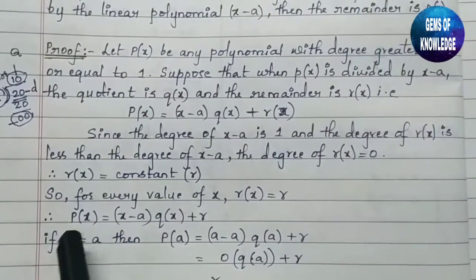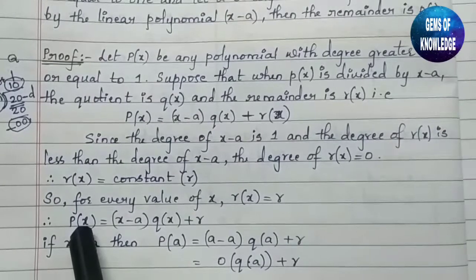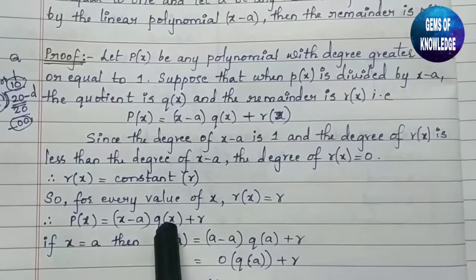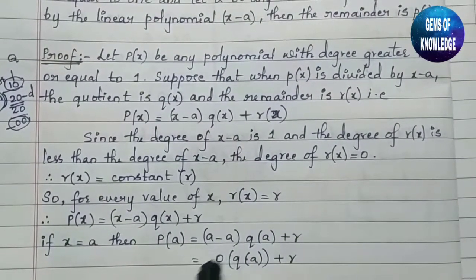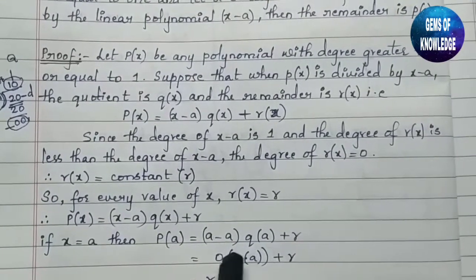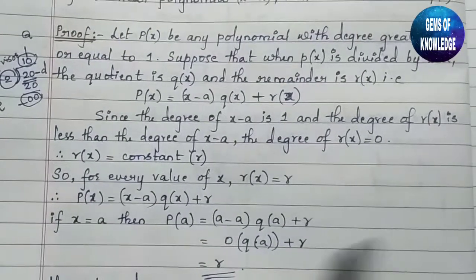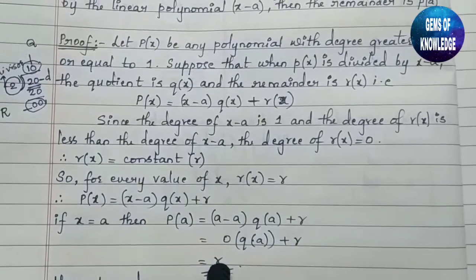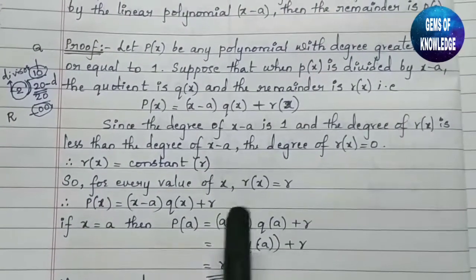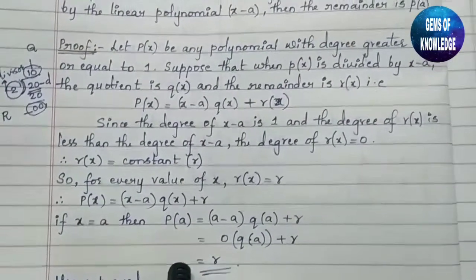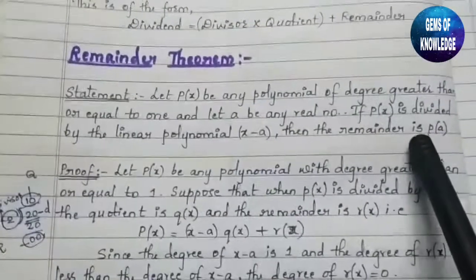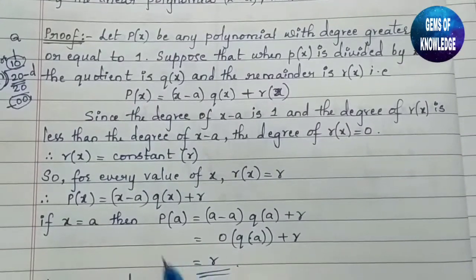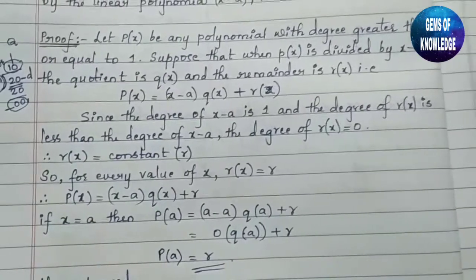Now if we substitute x = a, it becomes p(a) = (a − a)·q(a) + r. Since (a − a) = 0, we get p(a) = 0·q(a) + r = 0 + r = r. Hence p(a) = r, which is exactly what the theorem states — the remainder is always p(a). The Remainder Theorem is proved.